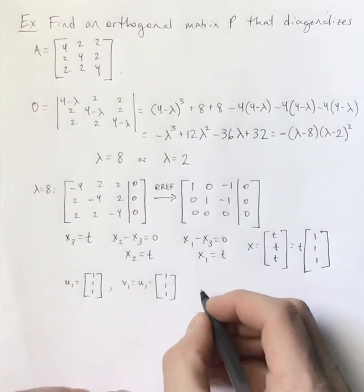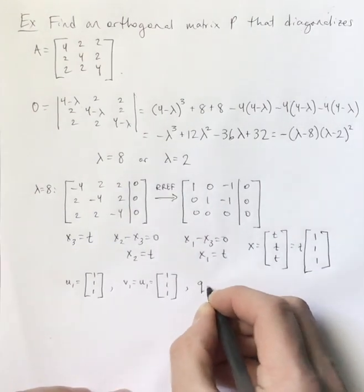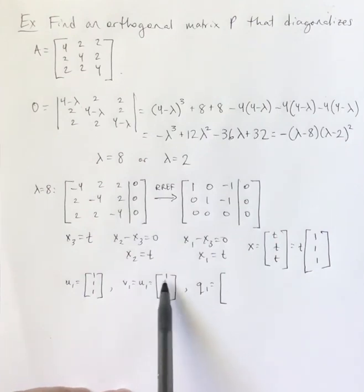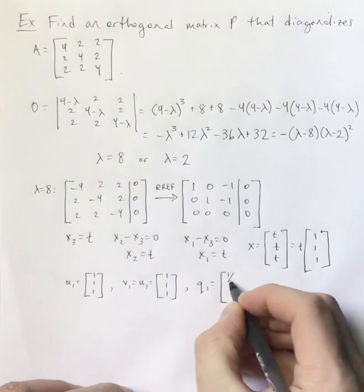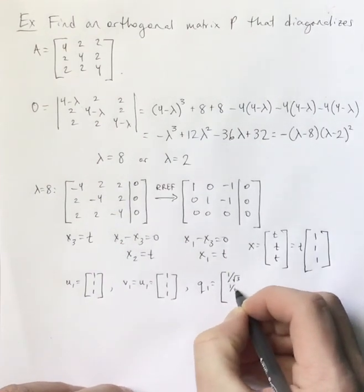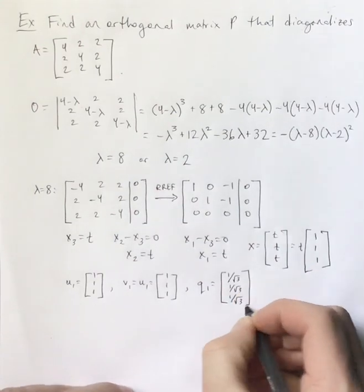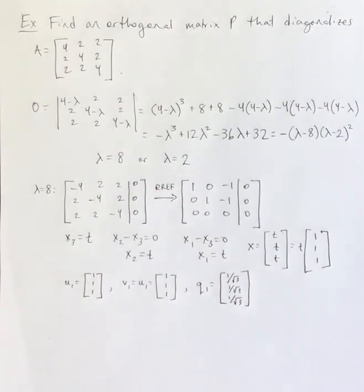And so then the last step is that we would have to normalize this. And the magnitude of that vector is square root of 3. Remember, we square each component, add them together, and take the square root. So the vector is the one that has 1 over root 3 as every entry.